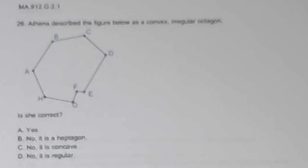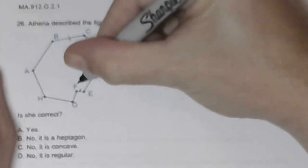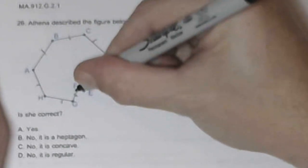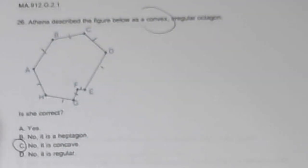Athena described the figure below as convex, irregular, octagon. Is she correct? Well, let's do the sides. One, two, three, four, five, six, seven, eight. It is an octagon. It is irregular because not all side lengths are equal. These are obviously shorter. But it's not convex. Even if it happens in just one little part, because it caves in on itself, it's concave.